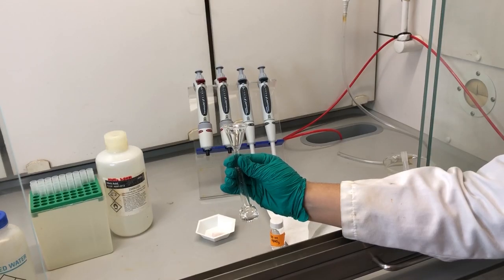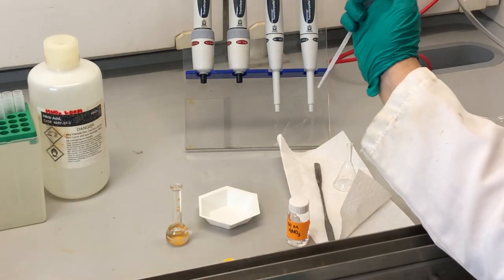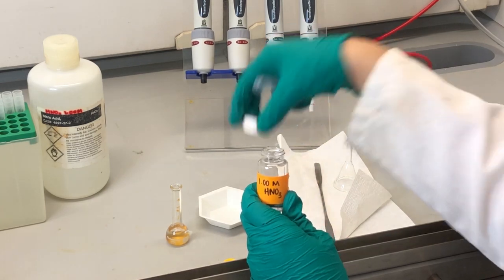We add the solid to our volumetric flask using a funnel. Once the solid has been added, we can rinse the edges of the volumetric flask neck to dissolve our solid.